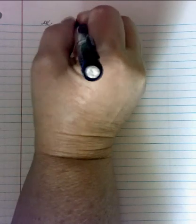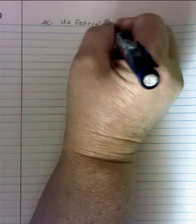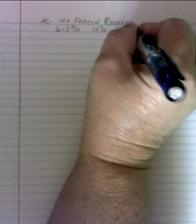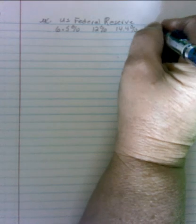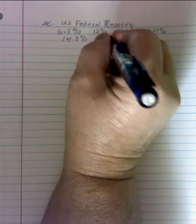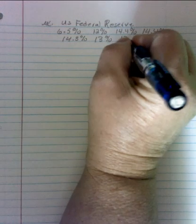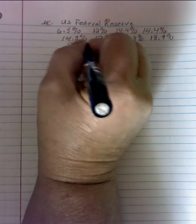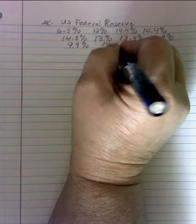All right, let's look at another example. This is some interest rates from the Federal Reserve. And so we have interest rates of 6.5 percent, 12 percent, 14.4 percent, another 14.4 percent, a 14.3 percent, a 13 percent, 13.3 percent, 13.9 percent, a 9.9 percent, and a 14.5 percent.